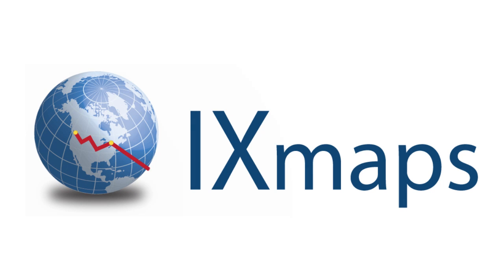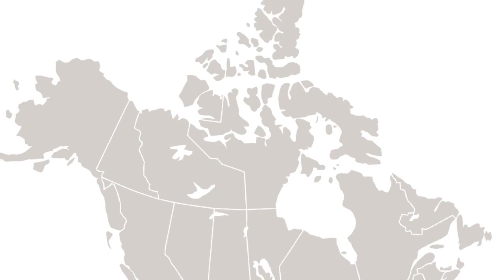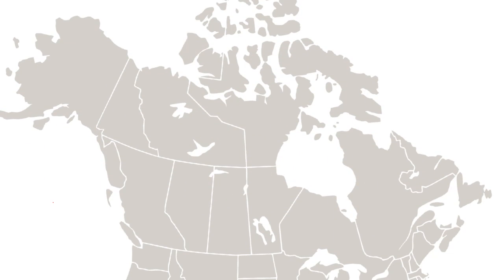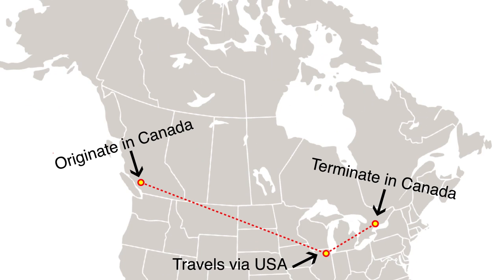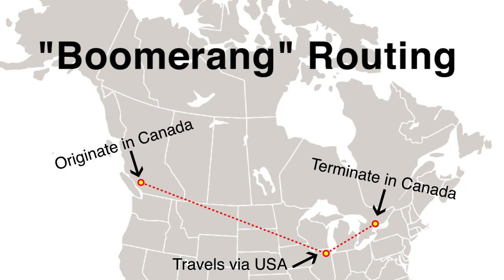IxMaps is an internet mapping tool that allows you to see the routes your data packets take through the internet. Did you know that a lot of internet traffic that begins in Canada and ends in Canada travels by the US? We call this boomerang routing.